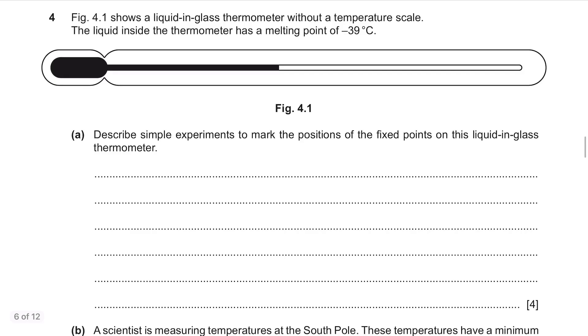Question 4. Figure 4.1 shows a liquid in glass thermometer without a temperature scale. The liquid inside the thermometer has a melting point of minus 39 degrees Celsius.